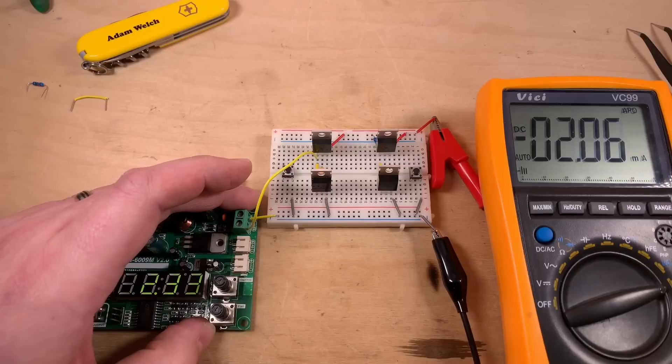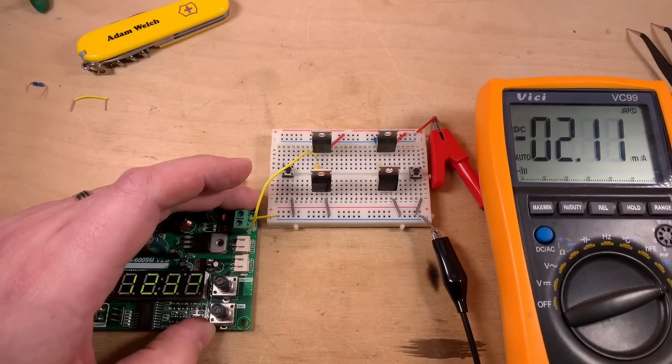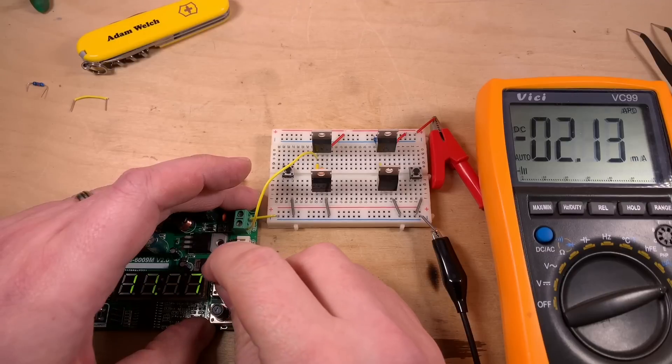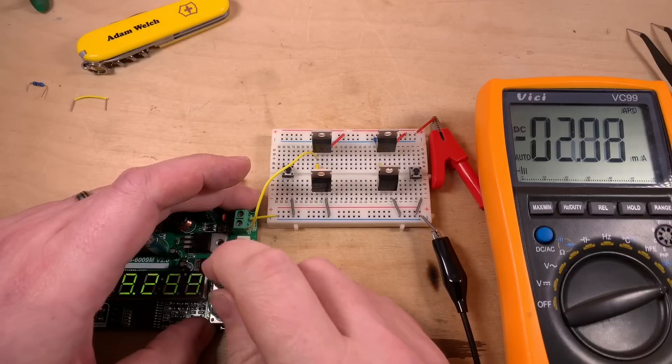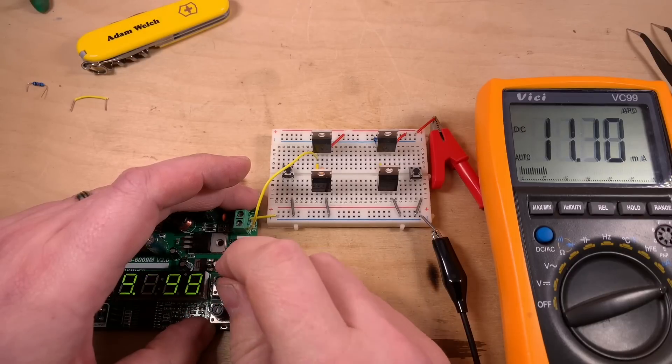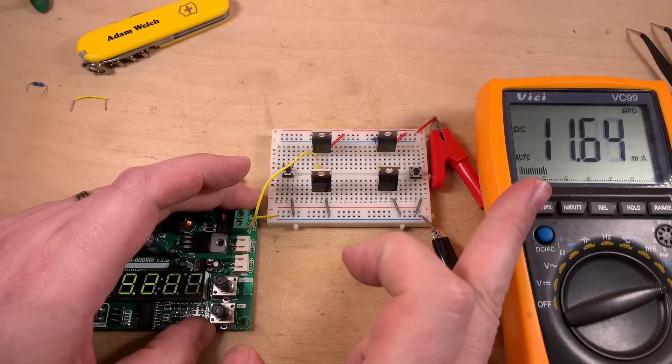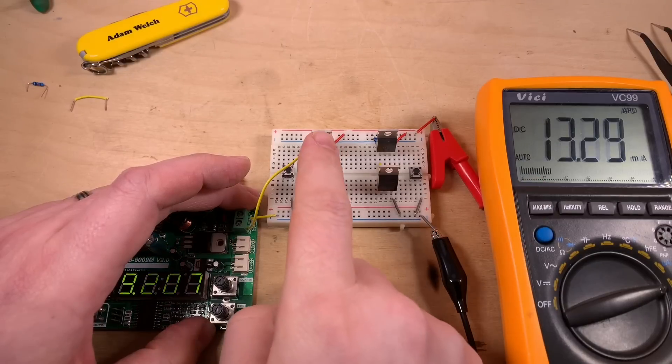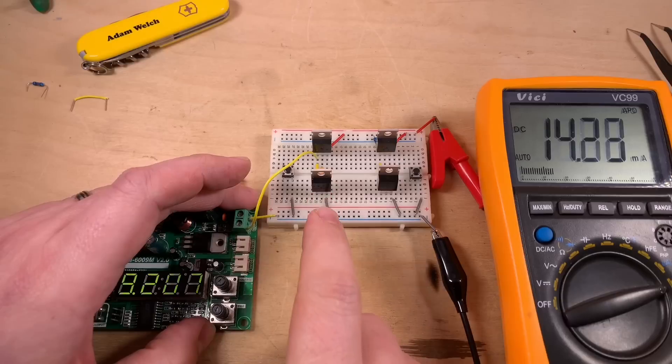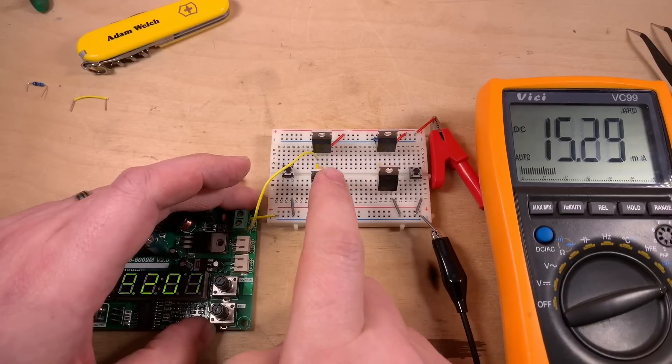Now my bench power supply is limited to 100 milliamps so we shouldn't see anything greater than that but without further ado let's reduce the gate voltage. So if we drop it just to 10, 9 and a bit volts.